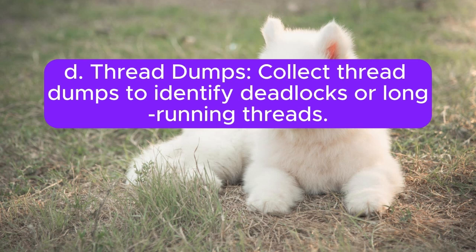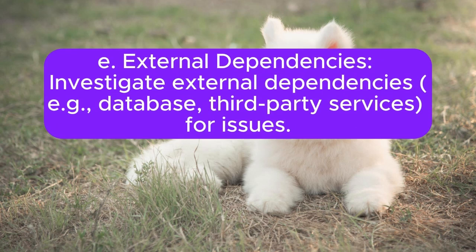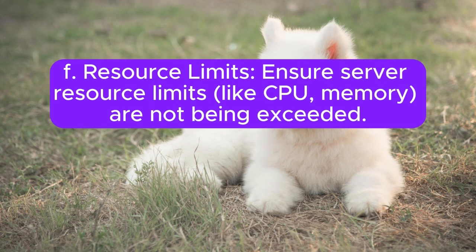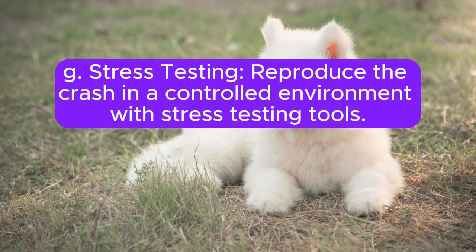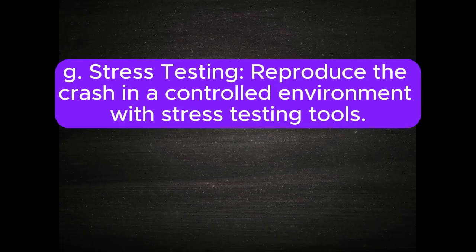D. Thread dumps — collect thread dumps to identify deadlocks or long-running threads. E. External dependencies — investigate external dependencies, for example database and third-party services, for issues. F. Resource limits — ensure server resource limits like CPU and memory are not being exceeded. G. Stress testing — reproduce the crash in a controlled environment with stress testing tools.